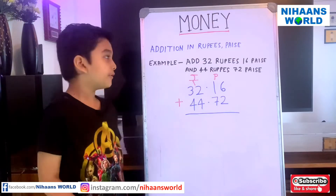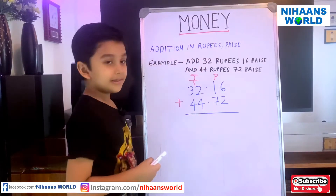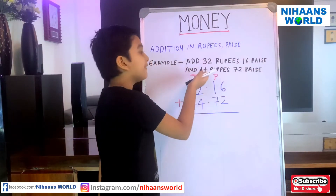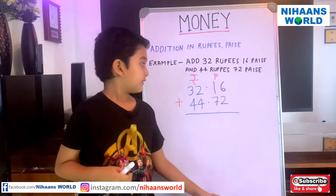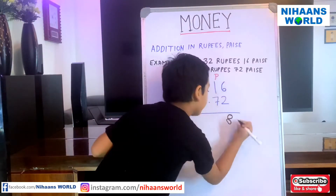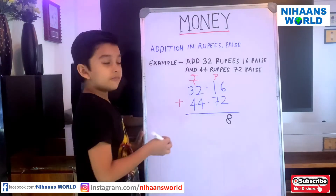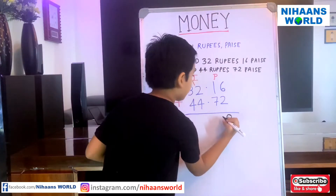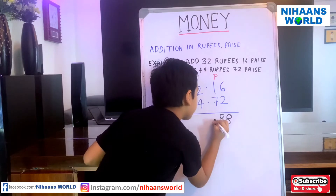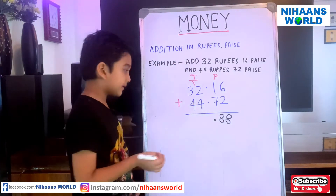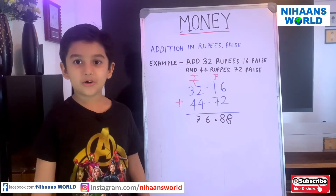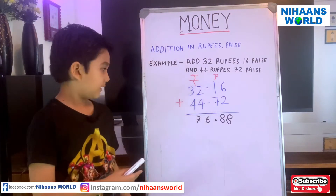Now friends, let us do addition in rupees and paise. Let us read the example: Add 32 rupees 16 paise and 44 rupees 72 paise. So, 6 plus 2 is 8, we write 8 here. And 1 plus 7 is 8, we write 8 here. We write dot in the dot column. 2 plus 4 is 6, and 3 plus 4 is 7. So, we got the answer 76 rupees 88 paise.